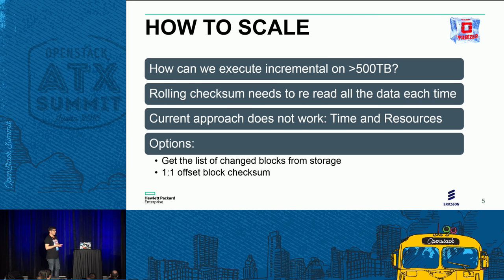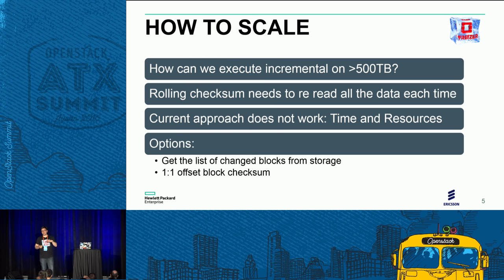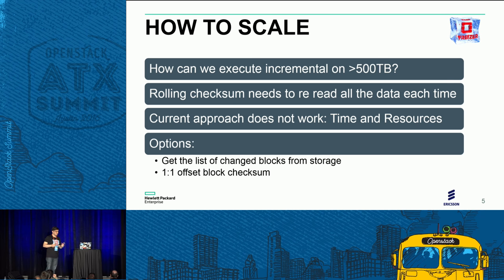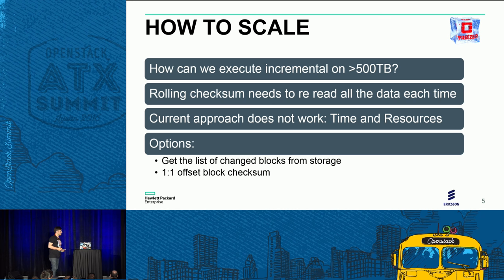Being totally honest, the rolling checksum rsync approach needs to re-read all the data every time to generate block hashes to compare with the previous execution. This is a significant problem: re-reading 500 or more terabytes every day to check the incrementals is mostly time-intensive and hard to do. The current approach doesn't work at that scale.